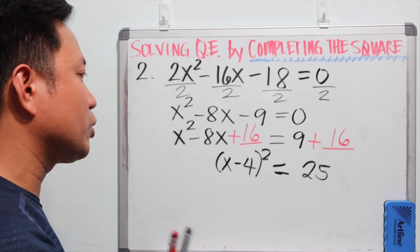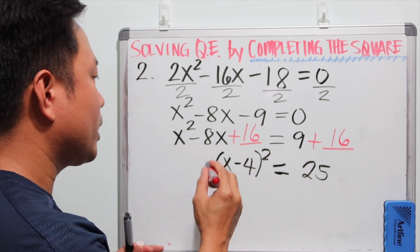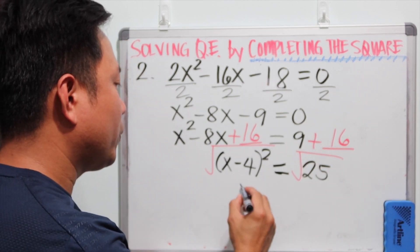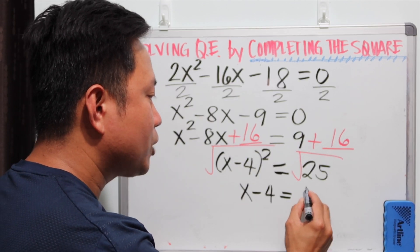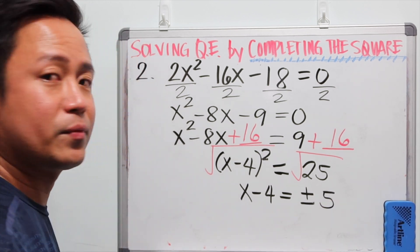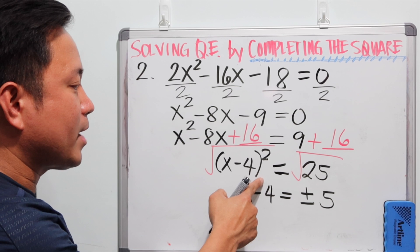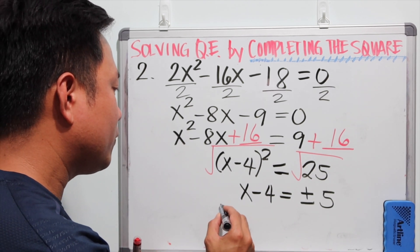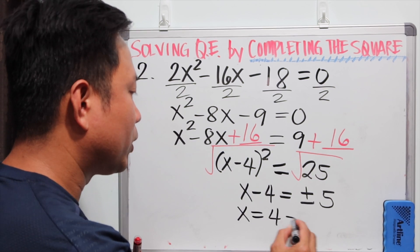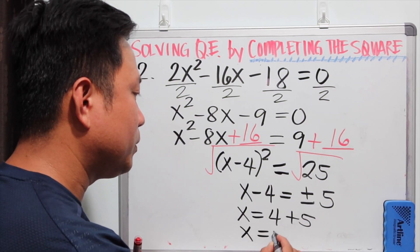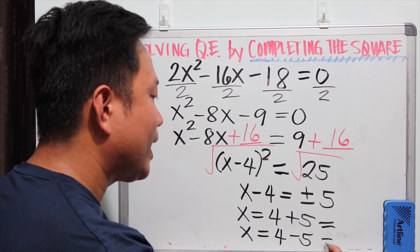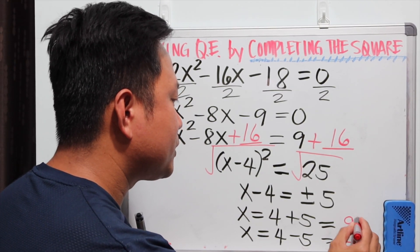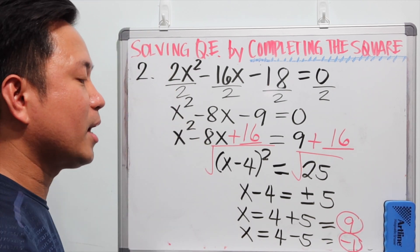The inverse operation for the square is square root, so we get the square root of both sides. Make sure when you get the square root of both sides, you put plus or minus 5, because this can be positive 5 or negative 5 to make the answer equal to 25 when squared. The values of x are: adding 4 to both sides gives x equal to 4 plus 5, and the other x value is 4 minus 5. So the two values for x are 9 and negative 1, and the zeros of this quadratic equation are 9 and negative 1.